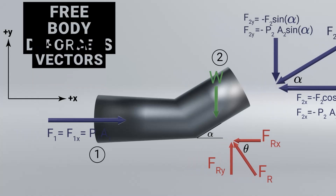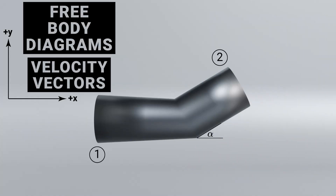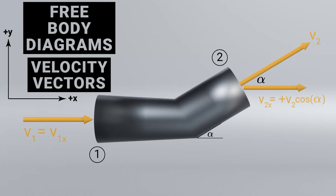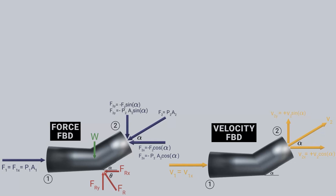Now let's draw the free body diagram of the velocity vectors with respect to the control volume. First, we denote velocity v1 — the velocity entering the control volume — which acts strictly in the x direction, so v1 equals v1x. At point two, the velocity leaving the control volume is v2, acting at angle alpha. We break this into x and y components: v2x equals v2 cosine of alpha, and v2y equals v2 sine of alpha.